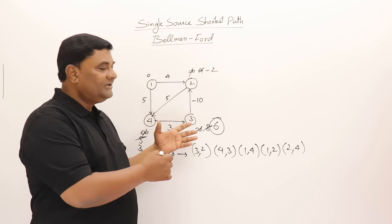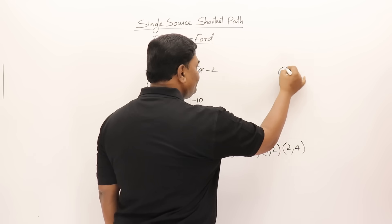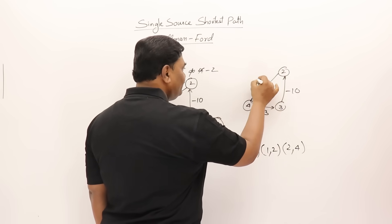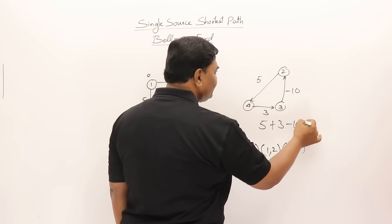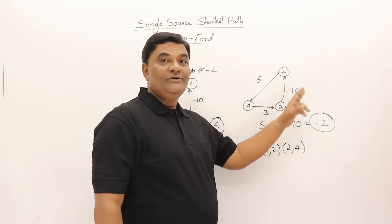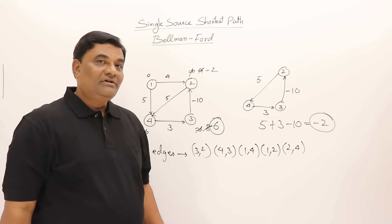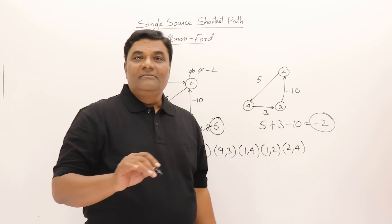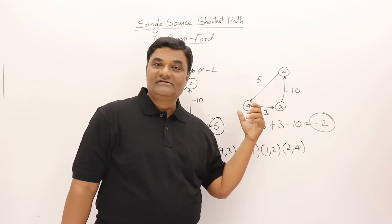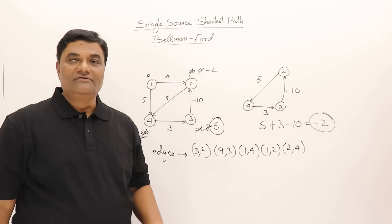The reason is there is a cycle involving vertices 2, 4, and 3 with edges of weights minus ten, plus three, and plus five. The total weight of this cycle is minus ten plus three plus five equals minus two — a negative total. Because the cycle has negative total weight, every time we traverse it the path cost decreases, so there is no end. We cannot freeze the answer. If there is a negative weight cycle, the graph cannot be solved — Bellman-Ford fails.